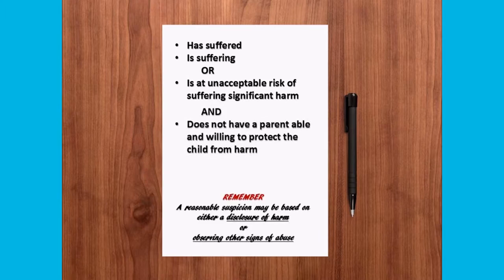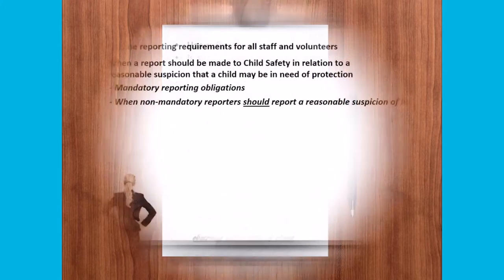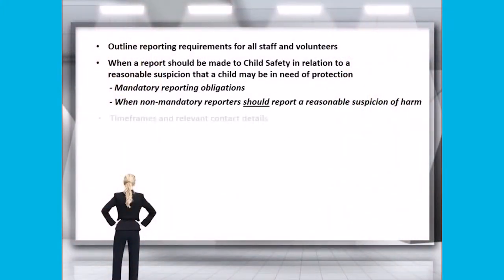Remember, a reasonable suspicion may be based on either a disclosure of harm or observing other signs of abuse. You should also ensure that you outline timeframes and relevant contact details for reporting a disclosure or suspicion of harm, and ensure that there is a clear process for reporting within your organisation, particularly where a disclosure is made concerning a person within your organisation.